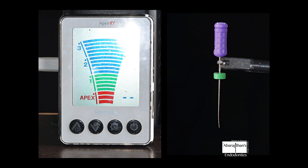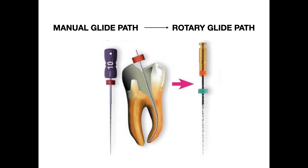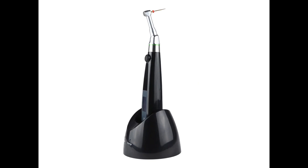The newer and simplified method is much easier and time-saving because we don't need a separate working length determination step with K-files. There is a popular shift towards rotary glide path from manual glide path, and we are slowly getting rid of hand K-files. This has also made working length control much easier with modern endomotors having an integrated apex locator function. There are numerous brands hitting the market now, and soon even popular brands will be launching endomotors with this integrated apex locator function.